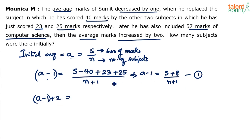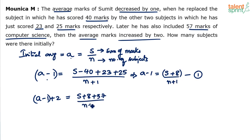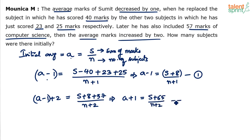Comparing with the first equation, when one more subject was included: S plus 8 was the sum, it becomes S plus 8 plus 57. Divided by N plus 1 plus 1, which makes N plus 2 — one more subject has been added. This is the second equation: A plus 1 equals S plus 65 divided by N plus 2.